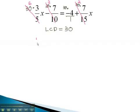So now all that remains is 6 times 3x, or 18x, minus 3 times 7, which is 21, equals 30 times negative 4, which is negative 120, plus 2 times 7x, which is 14x.